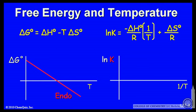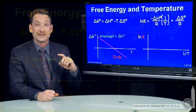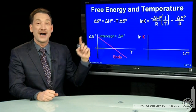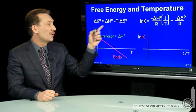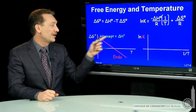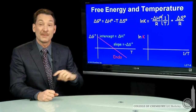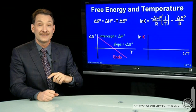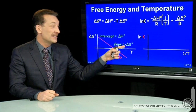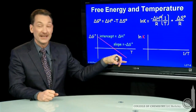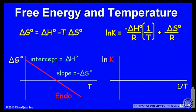So if I plot for an endothermic reaction delta G versus T, the fact that it's endothermic determines something about the intercept, because the intercept is determined by delta H. So an endothermic reaction will have a positive intercept. The slope is determined by delta S. So if delta S is positive, the slope will be negative. The negative sign is built into the equation.